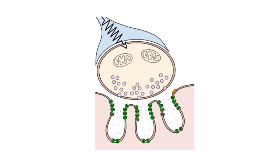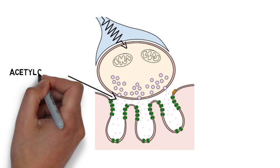When an action potential travels down the motor neuron, it causes the release of acetylcholine into the synaptic cleft.